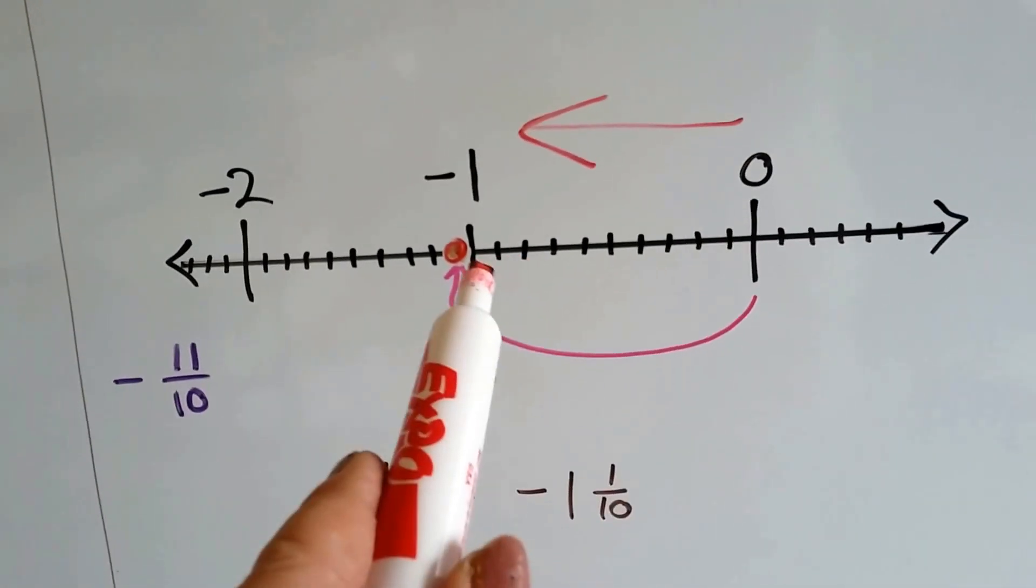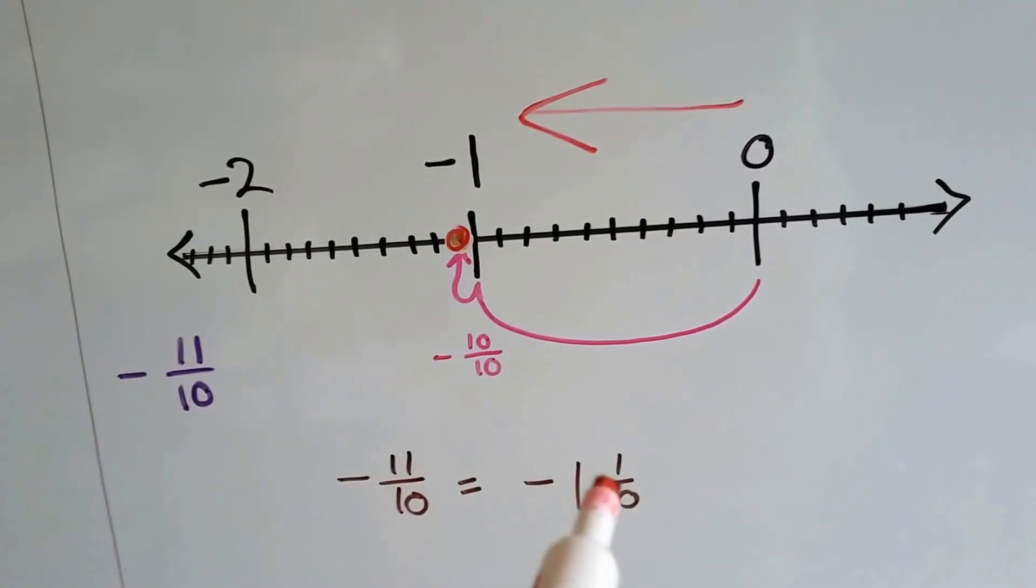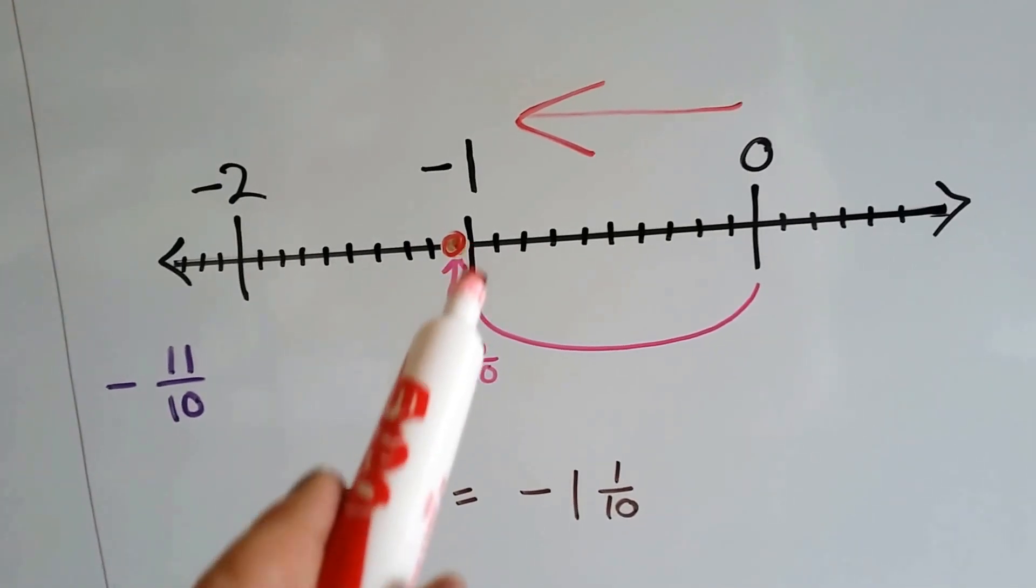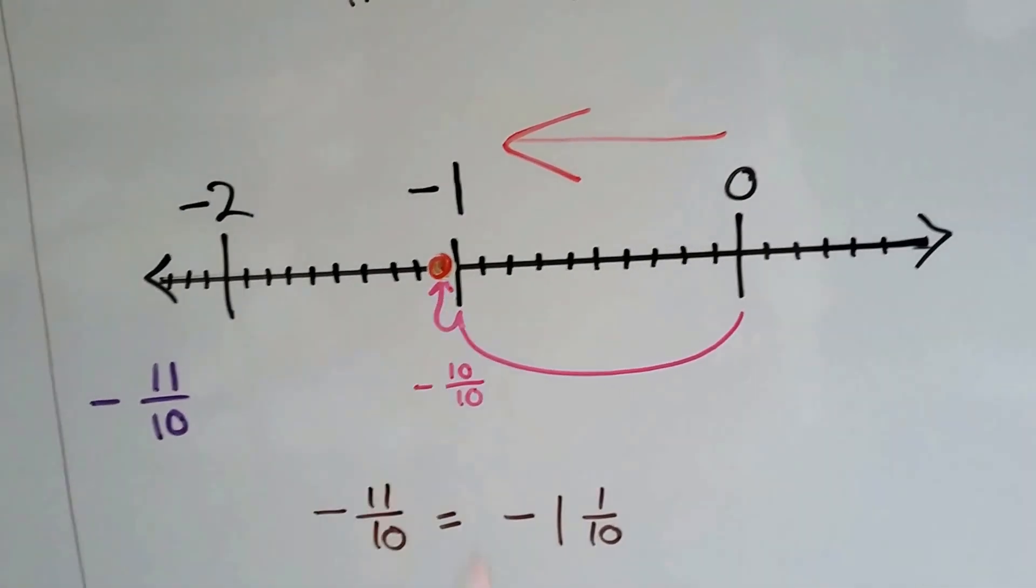Ten-tenths would be one. So negative ten-tenths would be negative one. Now we just need one more tenth to have eleven-tenths. So we go to the one next little space and it's right there. We graph our point right there.